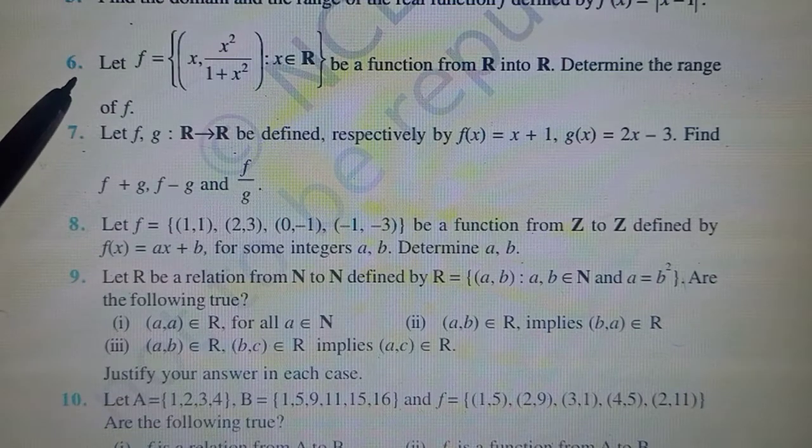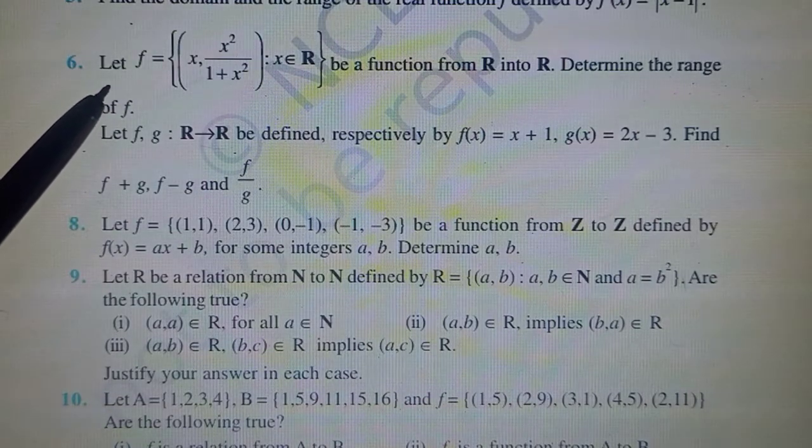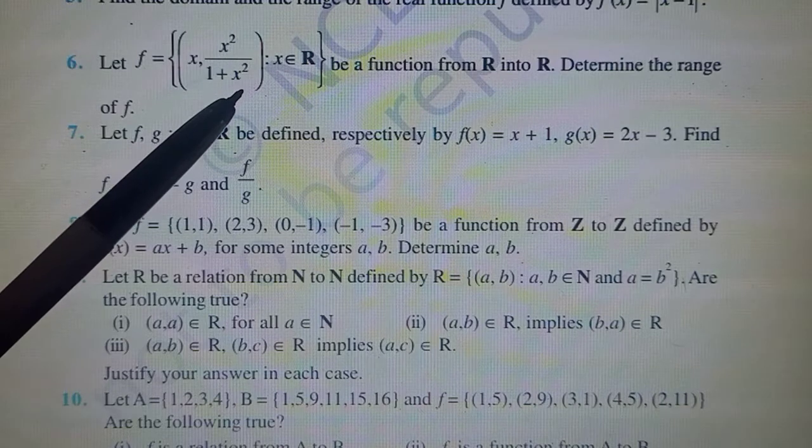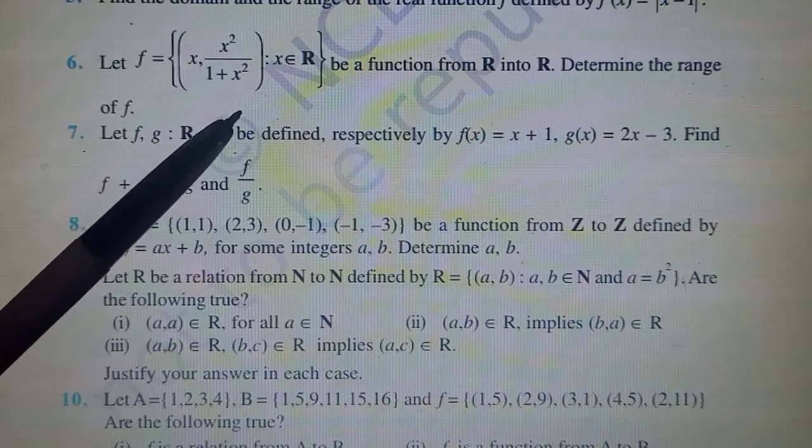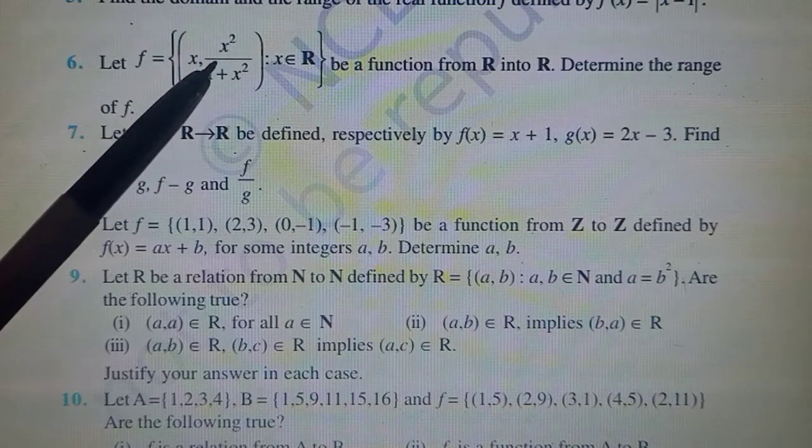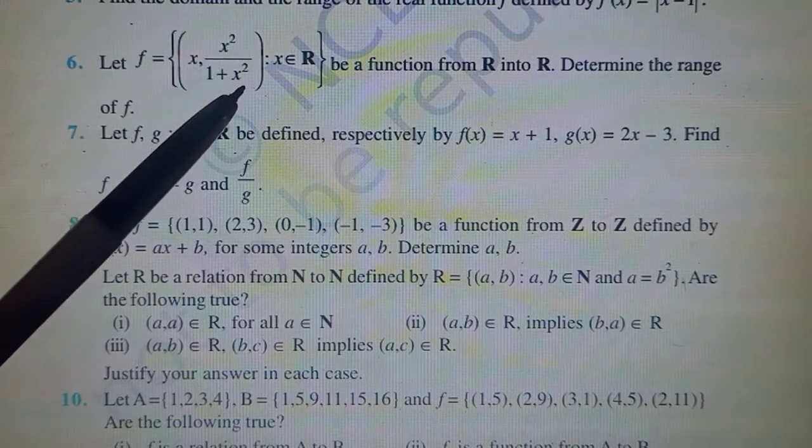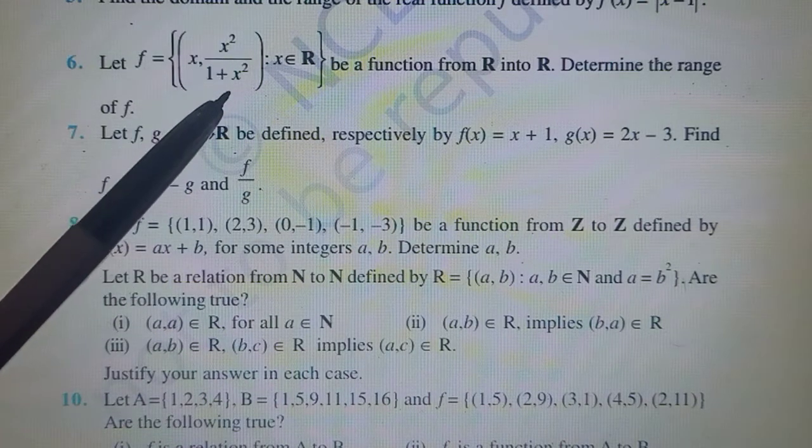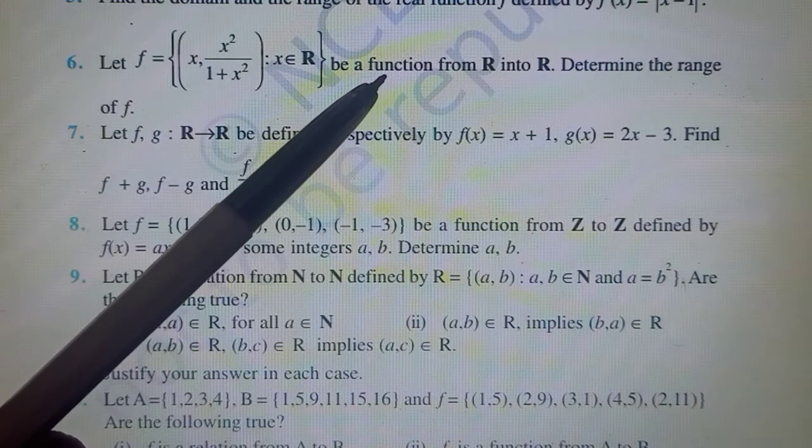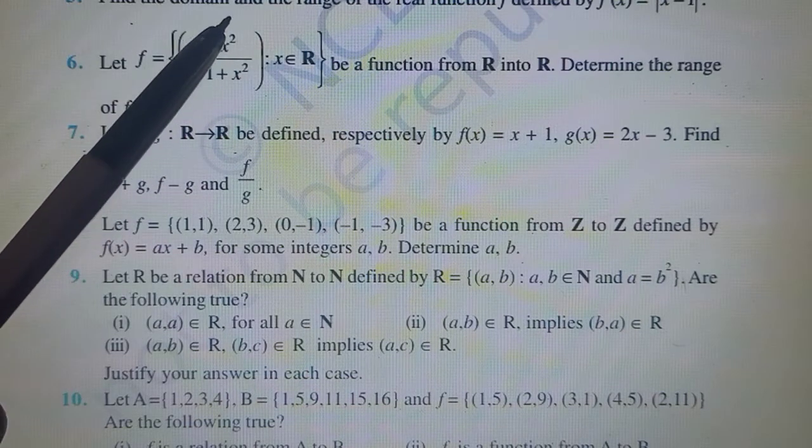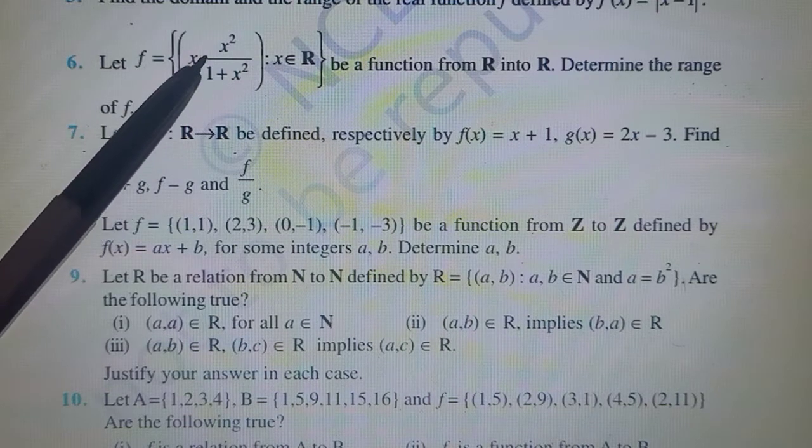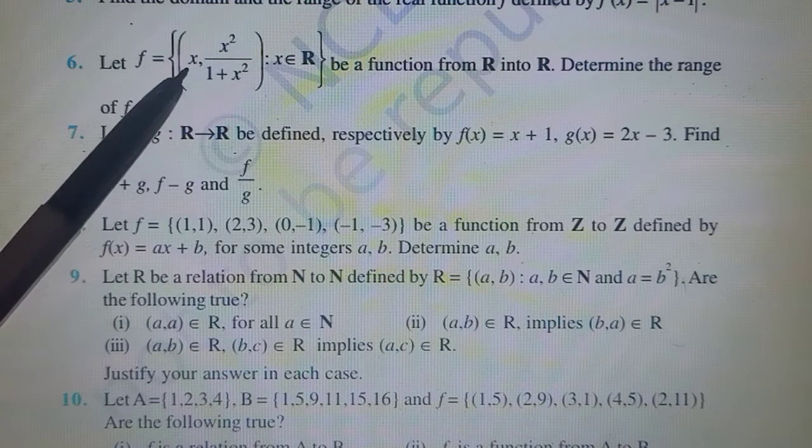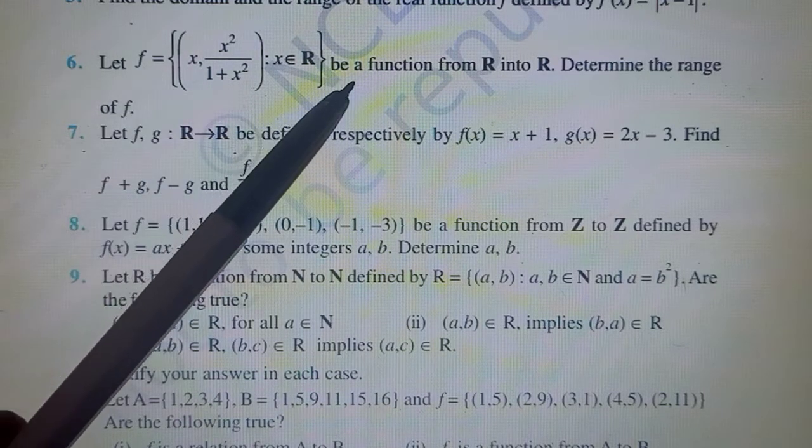Continuing remaining questions from miscellaneous exercise, question number six onwards. Let f be a function defined as (x, x²/(1+x²)). This is another way of expressing a function - the ordered pair (x,y) where y equals f(x). Here instead of writing y equals something, they've written the expression directly. This is a function from R to R, real numbers to real numbers.